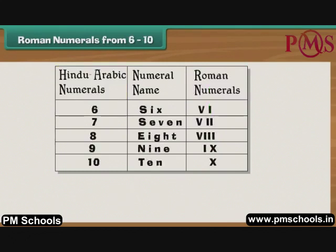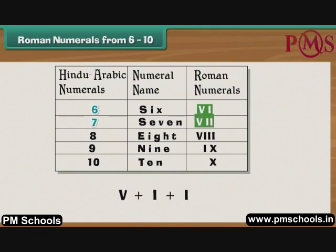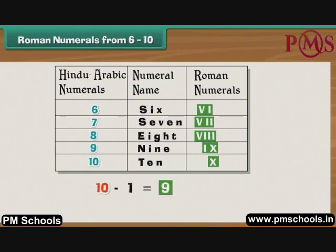Roman numerals from 6 to 10. We know that 6 can be expressed as 5 plus 1, therefore 6 is written as VI, meaning 5 plus 1. Similarly, 7 is written as VII, meaning 5 plus 2. 8 is VIII. 9 is IX, and 10 is X. Since 9 is 10 minus 1, it is written as IX, meaning 1 less than 10.